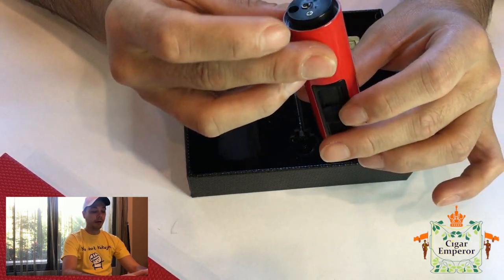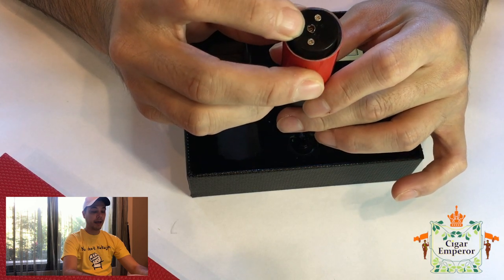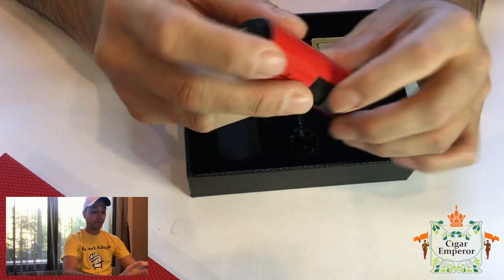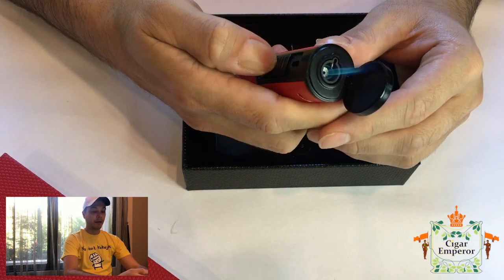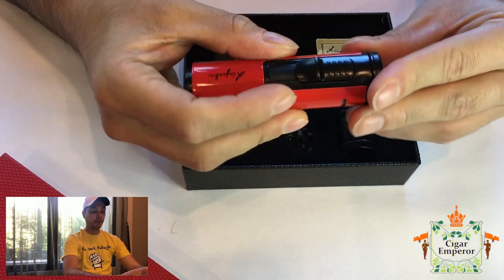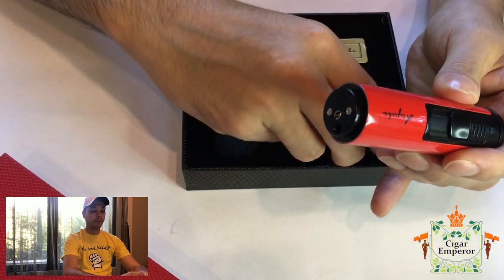But construction is pretty good. It has an indicator right here for gas. You can top it up at the bottom. You can adjust the flame intensity. And for you to light it, you need to flick that up. It's a single flame.